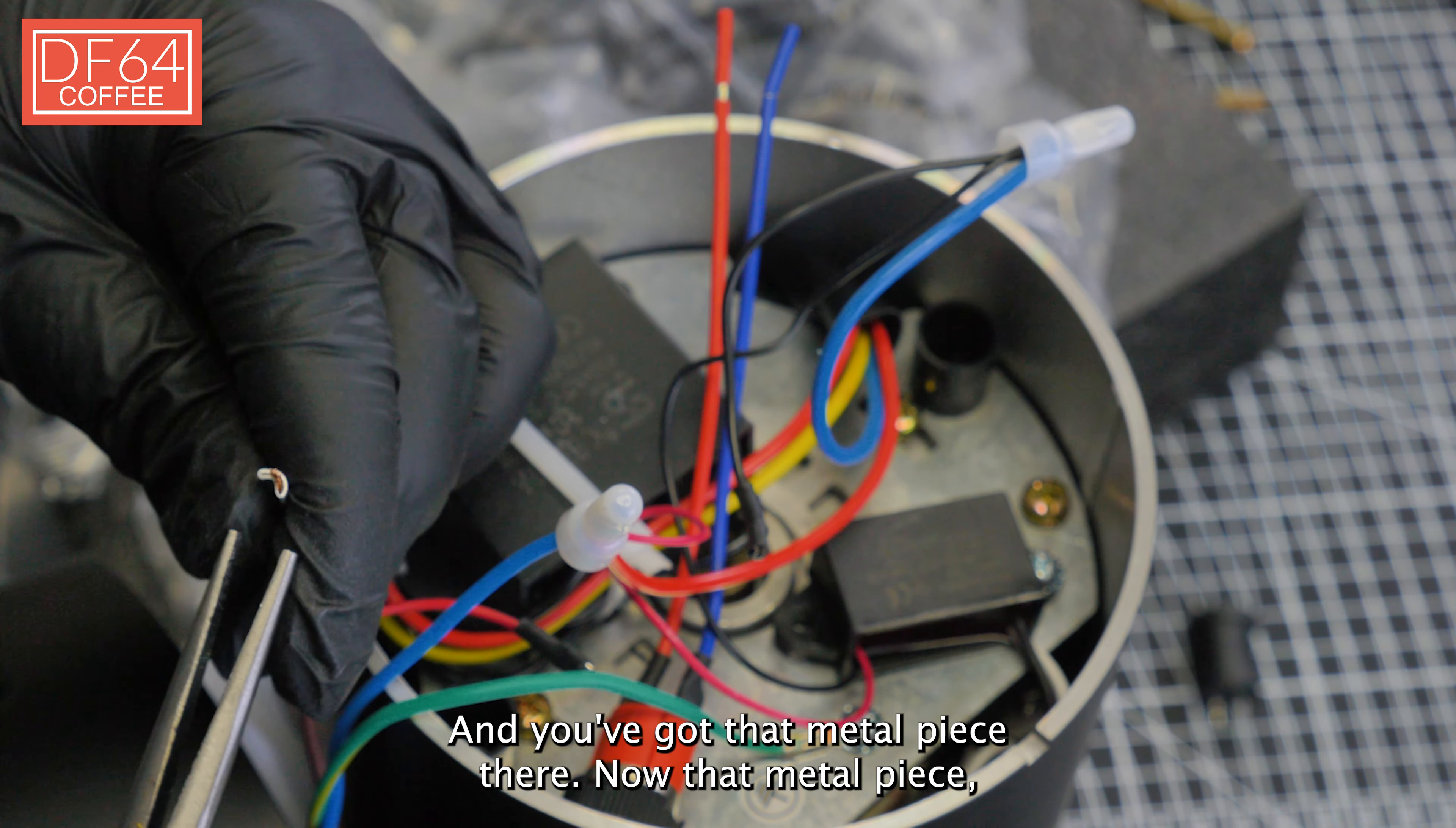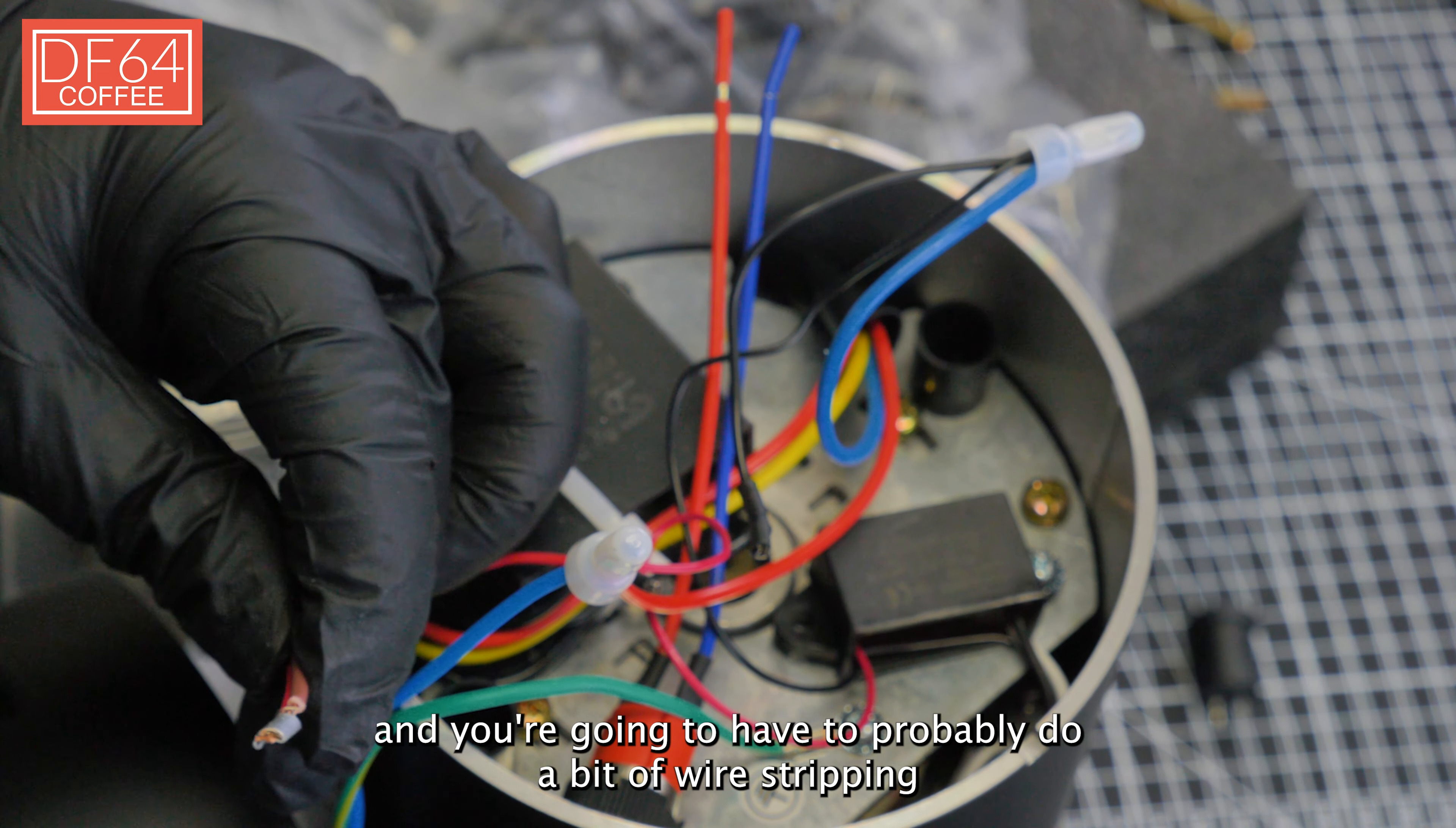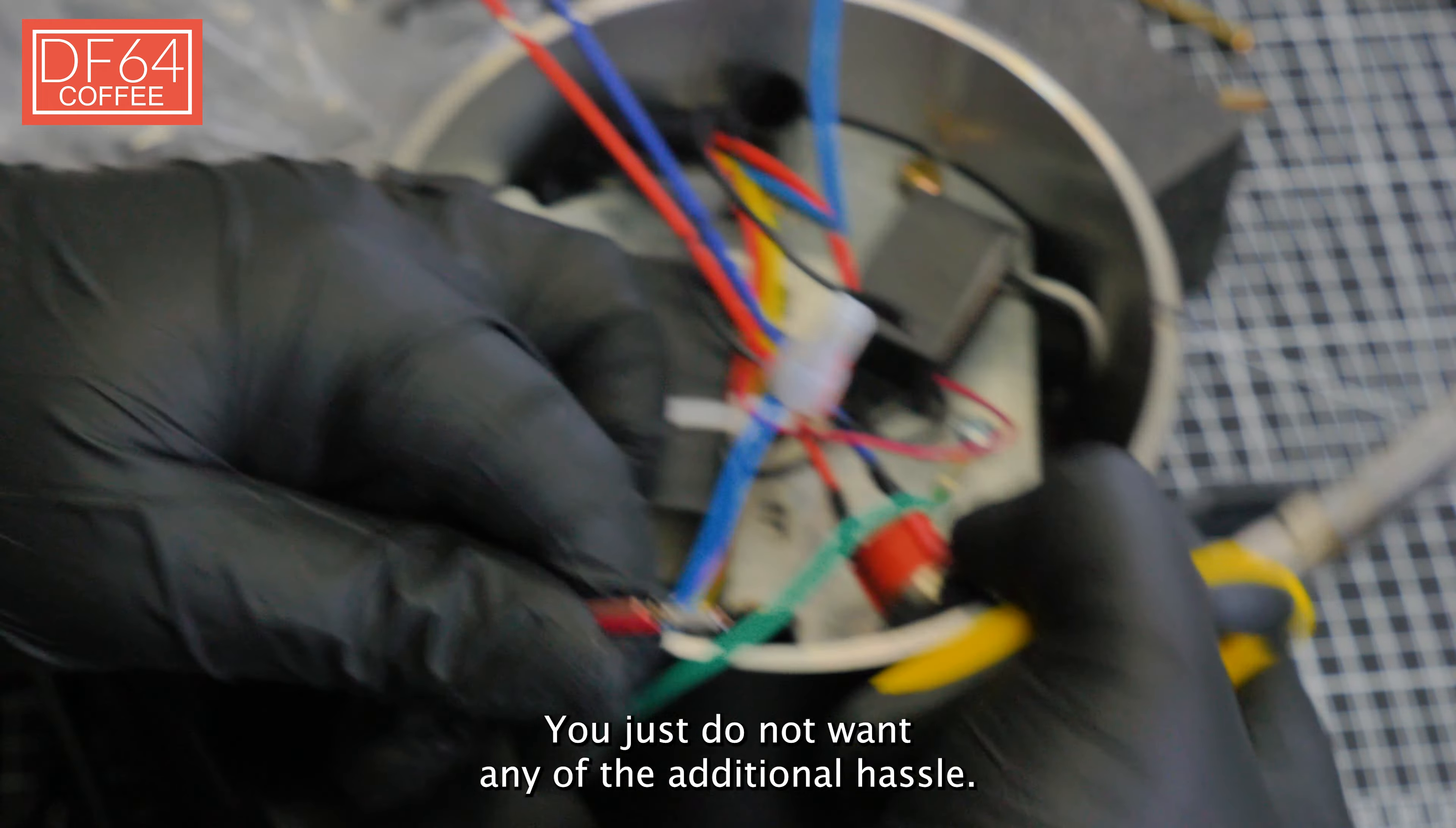There you go, and it came out. As you can see, wires are still intact and you've got that metal piece there. You want to make sure that it's not completely pressed out, not completely flattened. If it's too flat you're going to have to cut the wire and then you're going to have to do a bit of wire stripping so that you get new wires again for you to twist and reconnect.